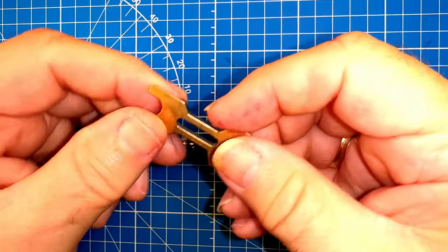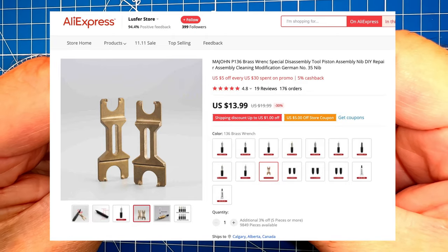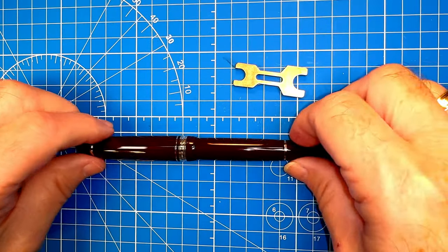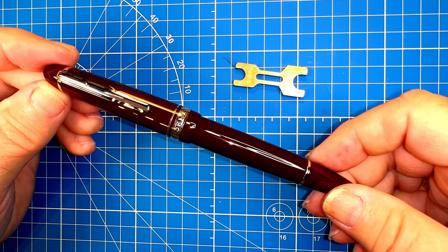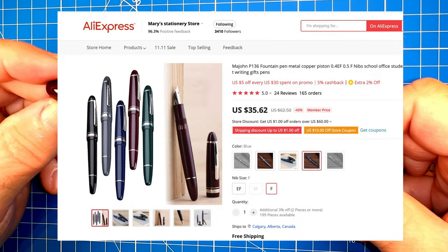First you'll need the Mahjong wrench. You can get this wrench on Etsy or AliExpress for around $13. And of course you'll need the Mahjong P136 Piston Filler which you can get on AliExpress or Etsy for around $36.